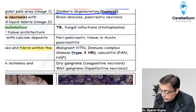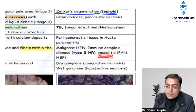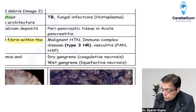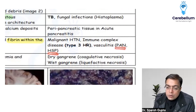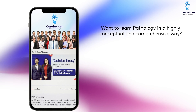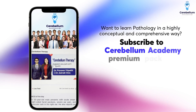Examples you need to remember for fibrinoid necrosis include vasculitic conditions. These vasculitic conditions can be associated with polyarteritis nodosa or Henoch-Schönlein purpura.